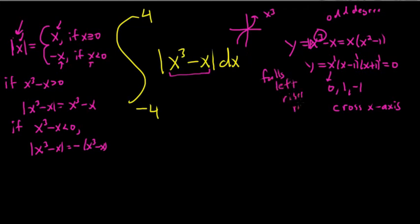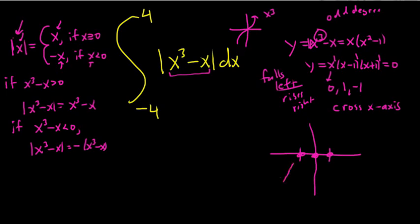You could use a calculator to graph it, but this is from the MIT Integration B qualifying exam, so I doubt they allow calculators. It falls left, rises right. So the graph crosses at negative 1, crosses at 0, crosses at 1. We want to integrate from negative 4 to 4, so let me plot negative 4 and 4 on the graph — we're integrating from here to here.